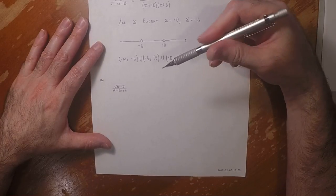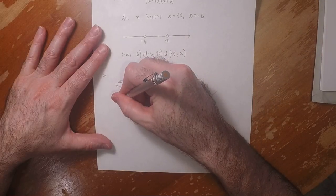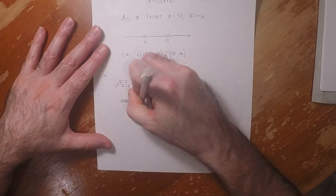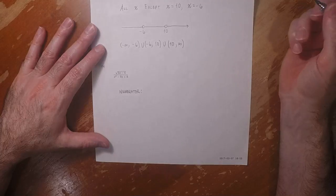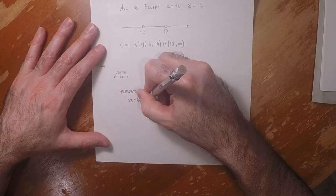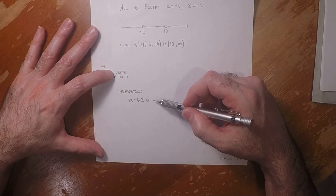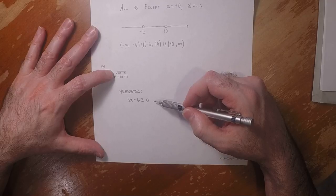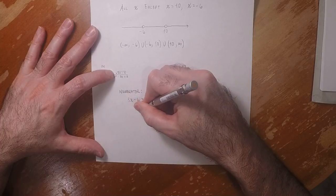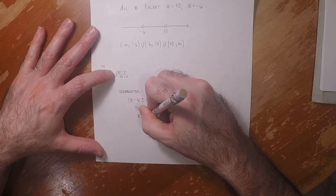For part B, there are two requirements. For the numerator, the numerator requirement is that 3x minus 6 has to be greater than or equal to zero. The reason why is the numerator is an even radical, and even radicals require non-negative arguments. So 3x is greater than or equal to 6, so x is greater than or equal to 2.